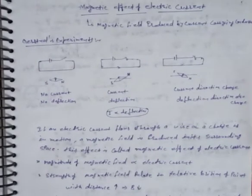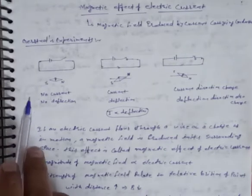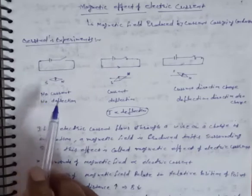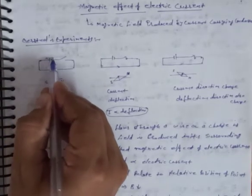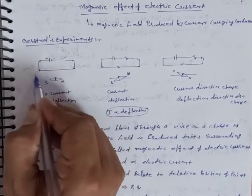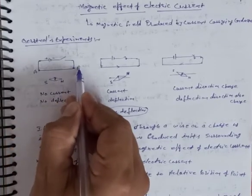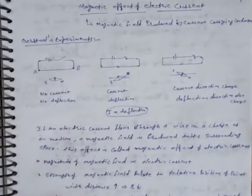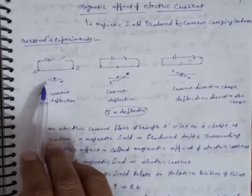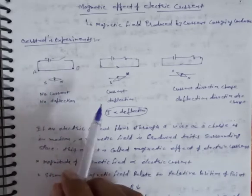This is called the magnetic effect of current electricity. First, Oersted did an experiment for this. As per Oersted's experiment, consider a circuit with a battery connected, a switch connected, and a conducting wire AB. Near this conducting wire AB, a compass has been placed.